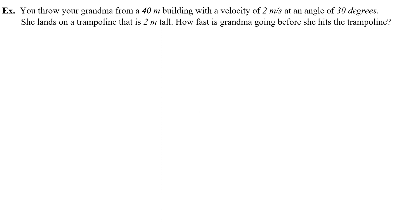Let's say you throw grandma from a 40 meter building with a velocity of 2 meters a second, but now you throw her at an angle of 30 degrees, and she lands on a trampoline that is 2 meters tall. We want to figure out how fast grandma's going before she hits the trampoline. Here's the trampoline, here's grandma. She's been thrown with a velocity V₀, 2 meters per second. In this case, I think about what I have in the beginning. I'll have potential energy because I'm at a height of 40 meters. Set the height of the trampoline equal to 2.